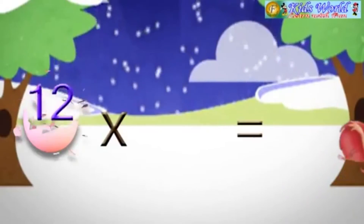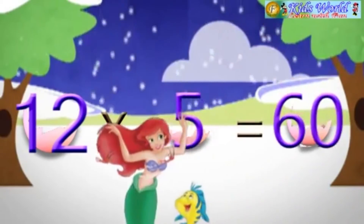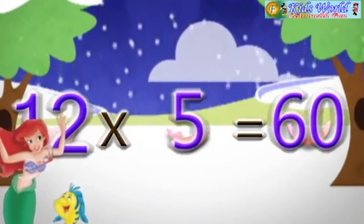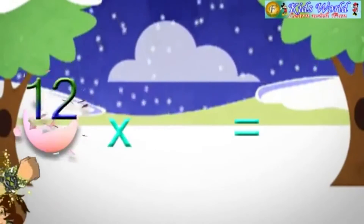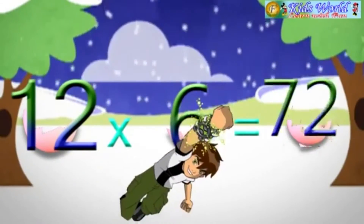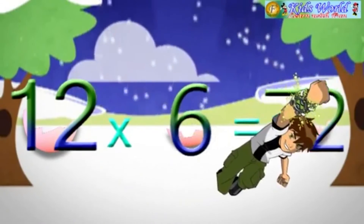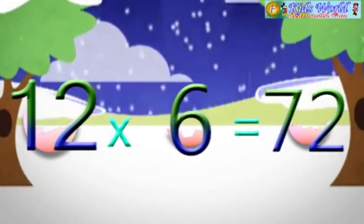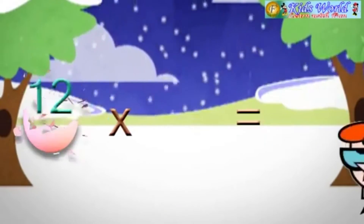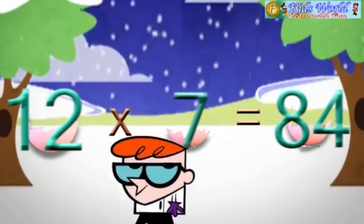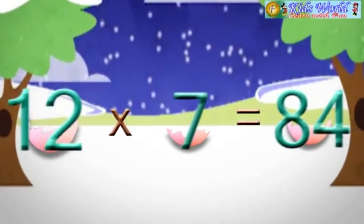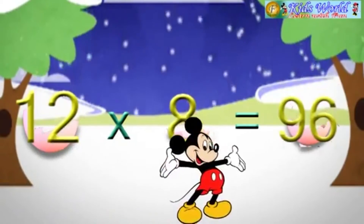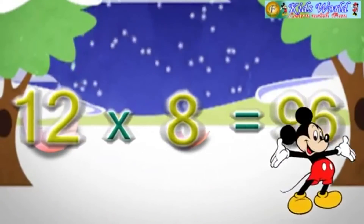12 into 5 is equal to 60. 12 into 6 is equal to 72. 12 into 7 is equal to 84. 12 into 8 is equal to 96.